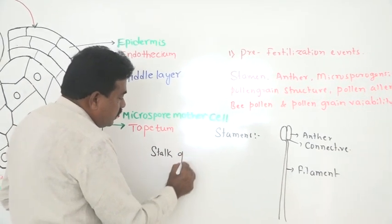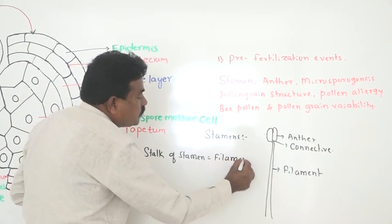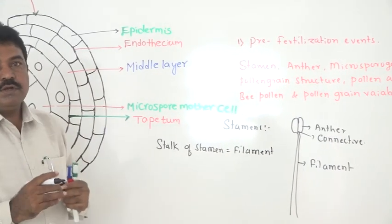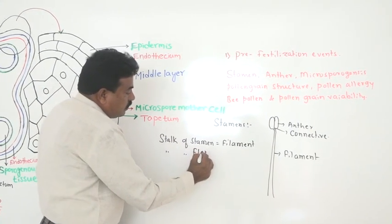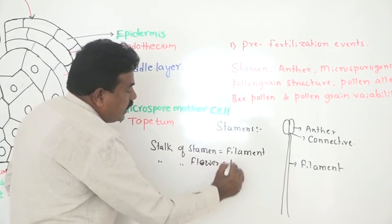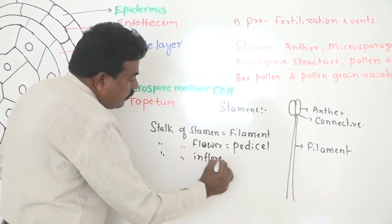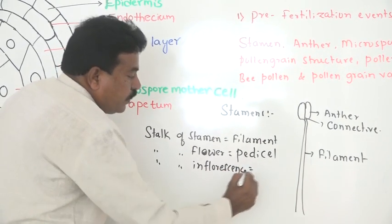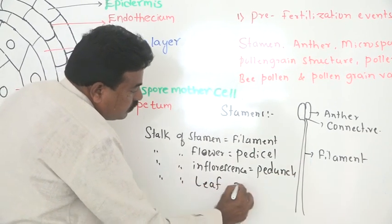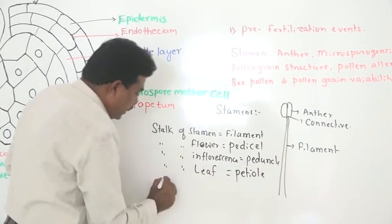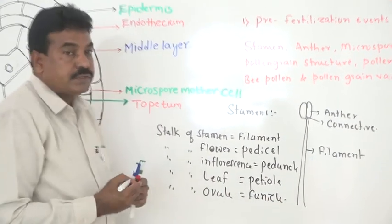In morphology of angiosperm, different structures are named by their stalk. For example, the stalk of a flower is called a pedicel, the stalk of an inflorescence is called a peduncle, the stalk of a leaf is called a petiole, and the stalk of an ovule is called a funicle. Stalk means holder.